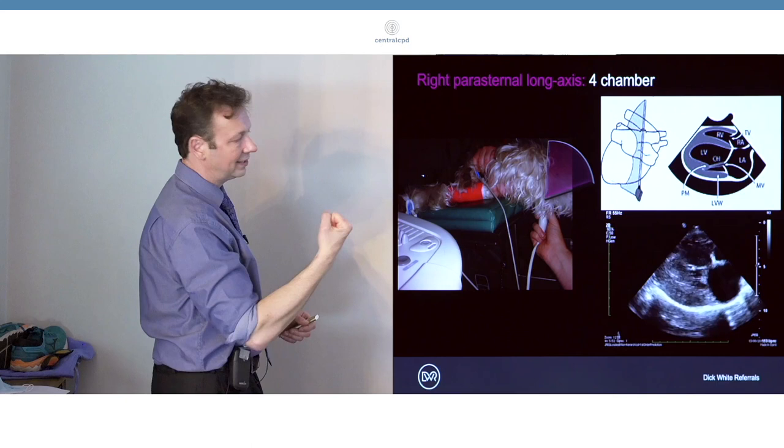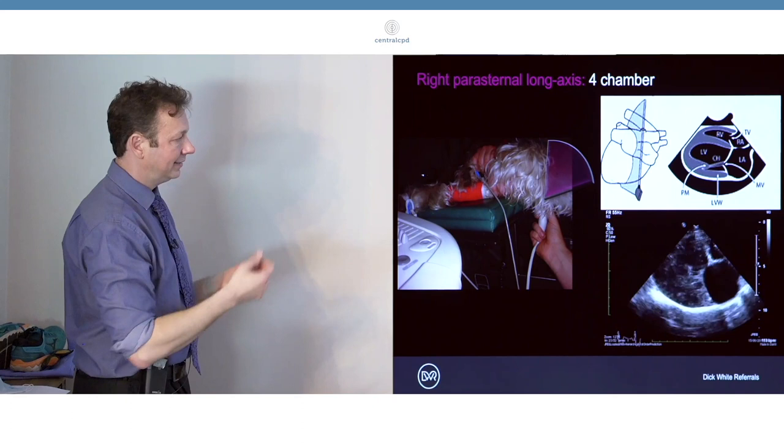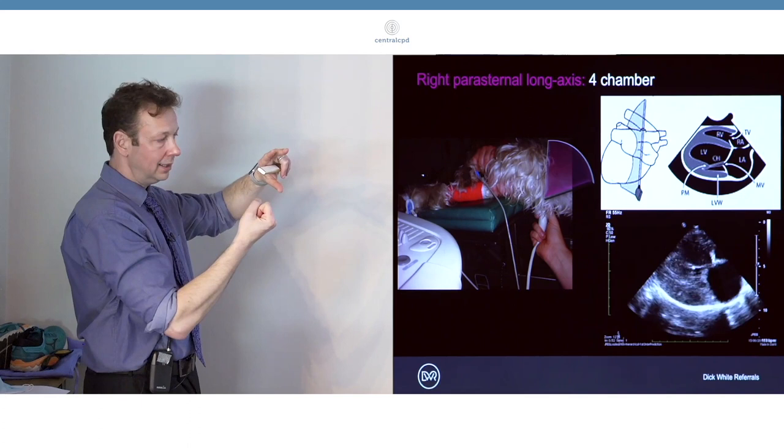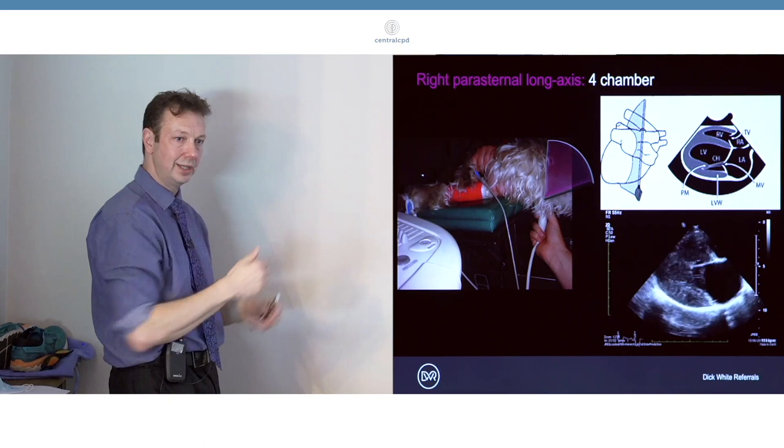One of the things that you'll find you have a tendency to do very often when you're starting doing a lot of echo is to have the transducer too far down towards the sternum. It's often useful to consciously make yourself slide that dorsally within intercostal spaces. You'll find you'll see a lot more of the heart in your image.